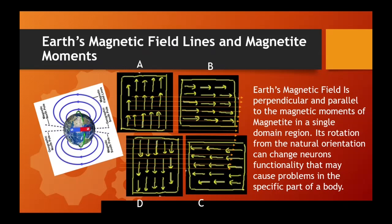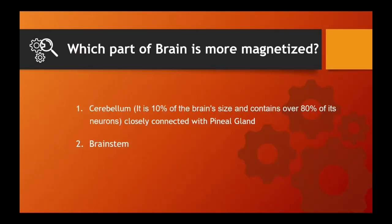In all four cases observed: when Earth's magnetic field is perpendicular to the magnetic moments of magnetite in a single domain region, its rotation from natural orientation can change neuron functionality — that is the important point of this study. When parallel or anti-parallel, the dipole remains in its original form. But at 90 degrees the orientation changes, and at that time neuronal signals carried to specific organs or senses of the body are not in the correct form, causing disturbance inside body and mind that will not be treatable by any medicine.